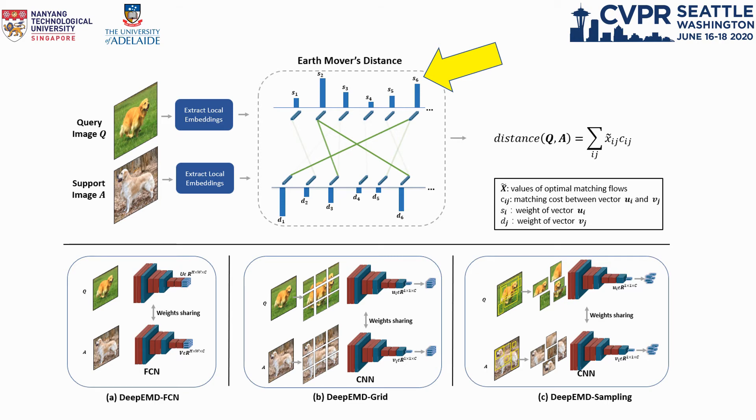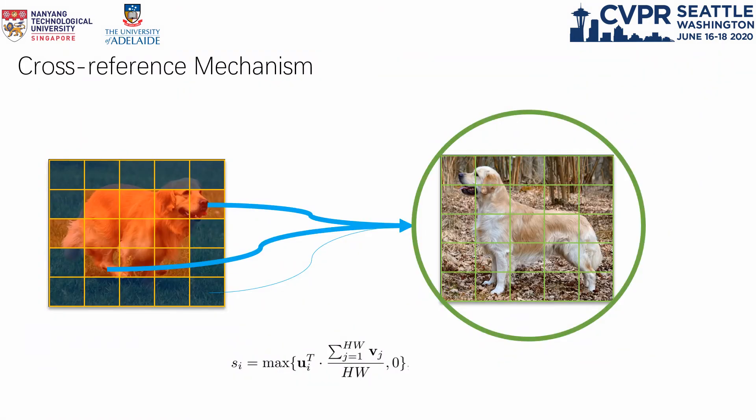We propose a cross-reference mechanism to determine the weights of the elements. The weight of each node is determined by comparing it with the global statistics of the other structure. This aims to assign more weights to the co-occurrent regions, which are more likely to be the foreground region.